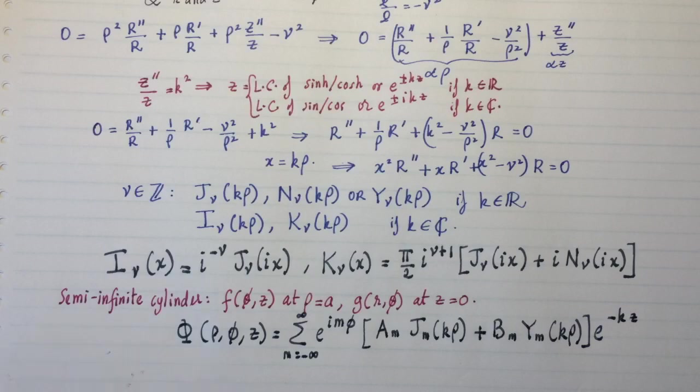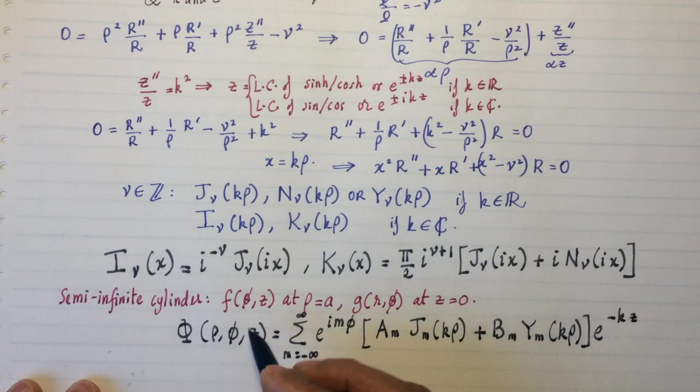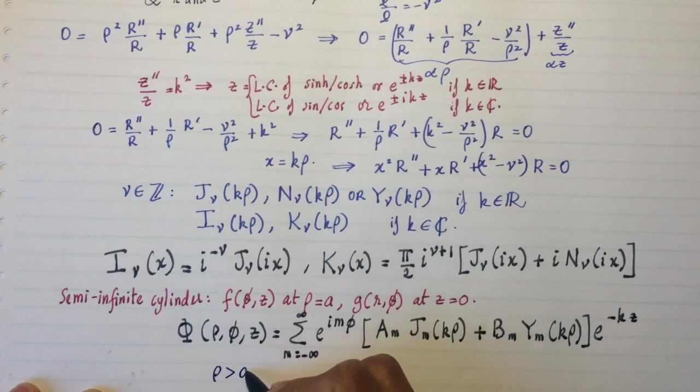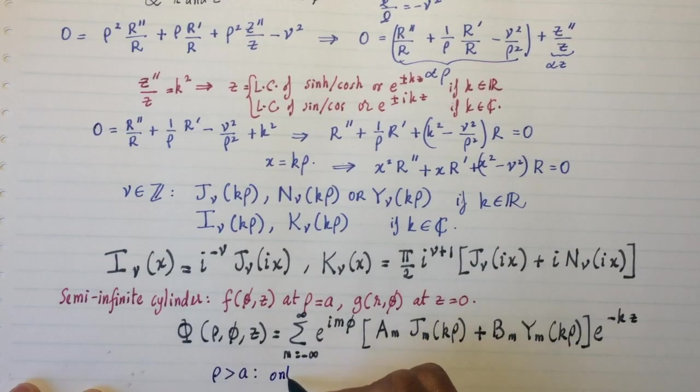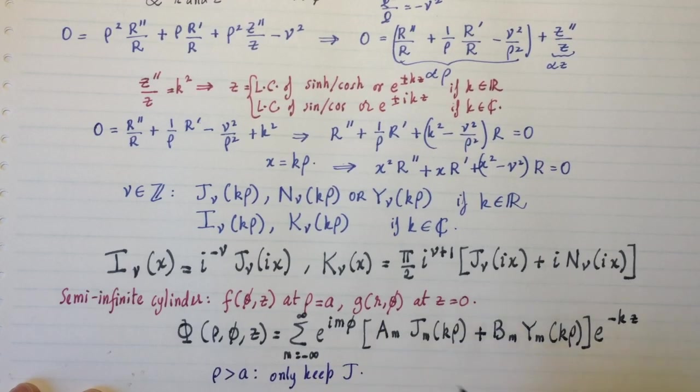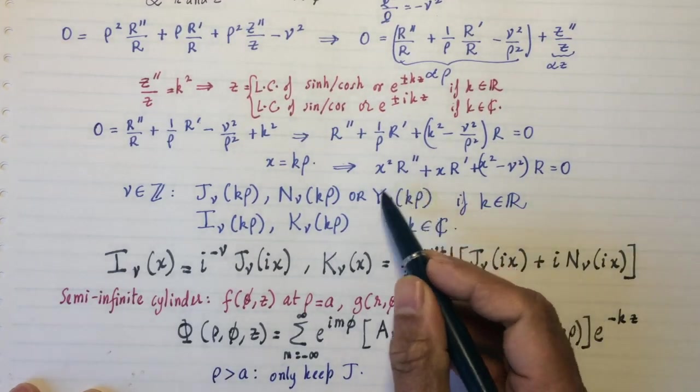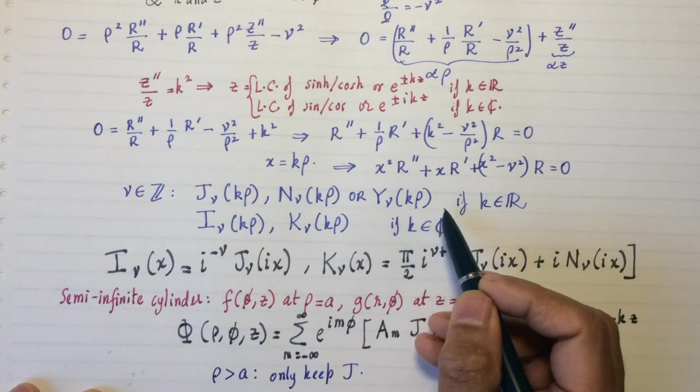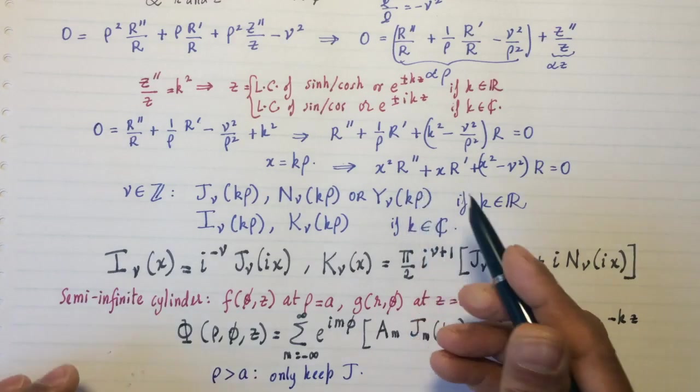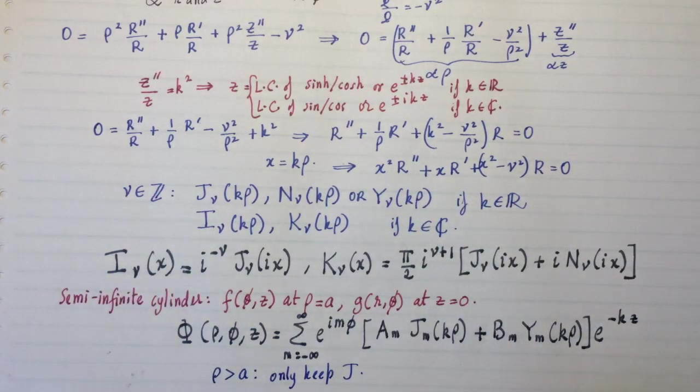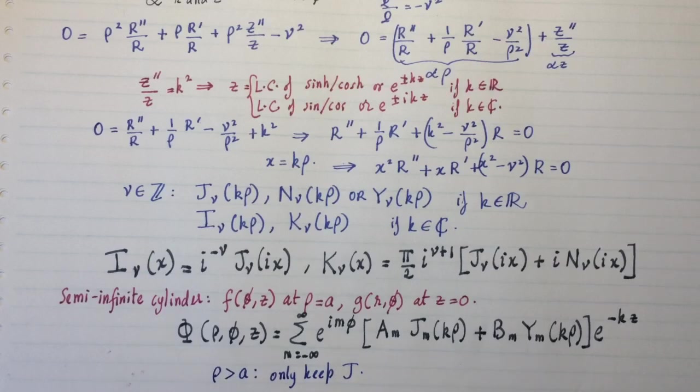So one comment, this solution is valid for both inside the cylinder and outside the cylinder. Within the cylinder, we can use both J and Y. There's no problem with that. But outside the cylinder, only keep J. The reason for that is Y has blow-up properties. So as ρ goes to infinity, this blows up. You don't want that. You want the temperature to die off at infinity. So J has appropriate properties. So you just keep the J for ρ > a.